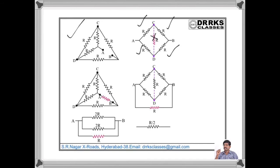Consider the next circuit. Again, the points C and D are at the same potential and there is no current flowing in this resistor. Then we have 2R, 2R, 2R, 2R — with two 2R branches in parallel. The effective resistance of the total circuit between A and B is R by 2.